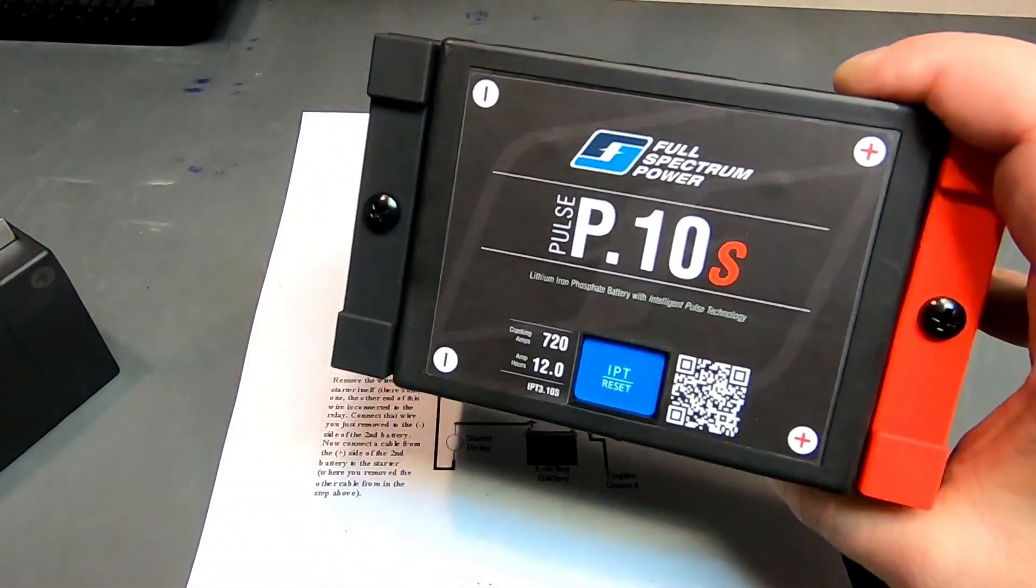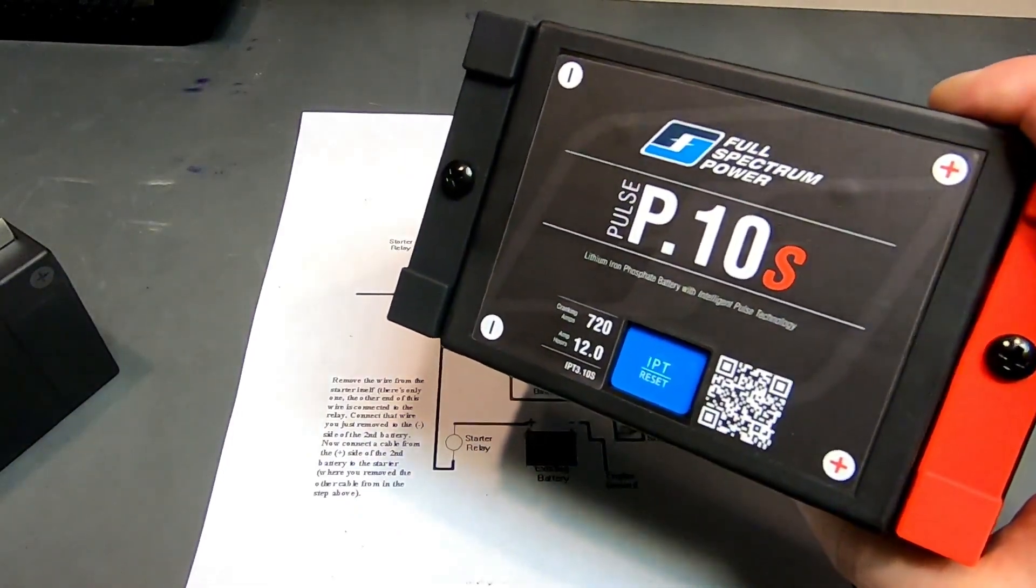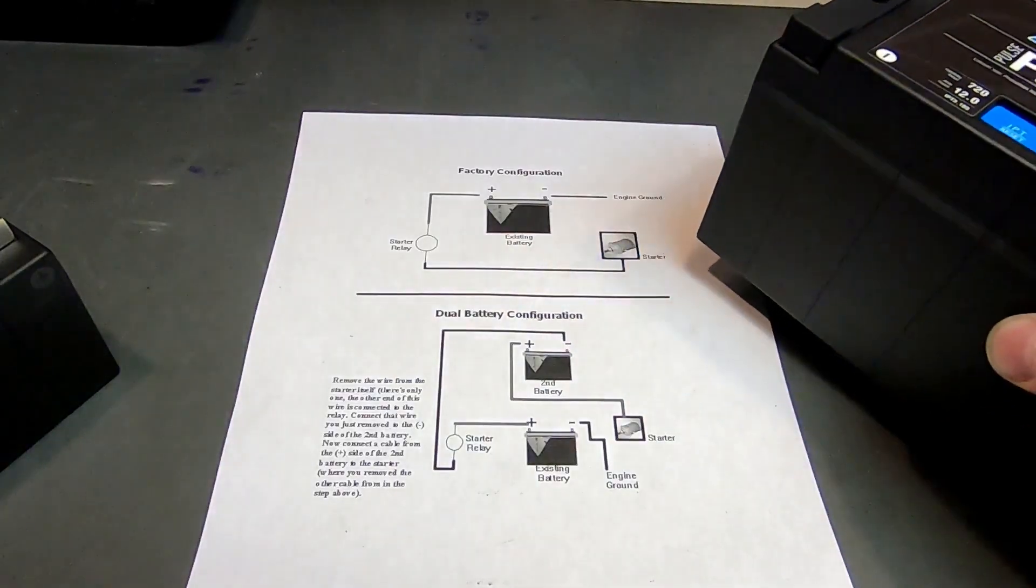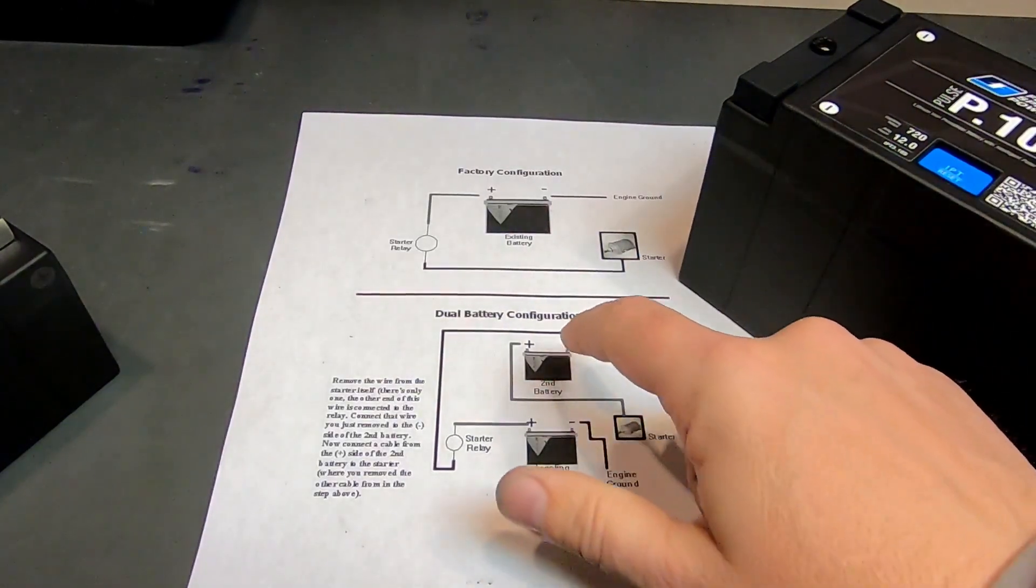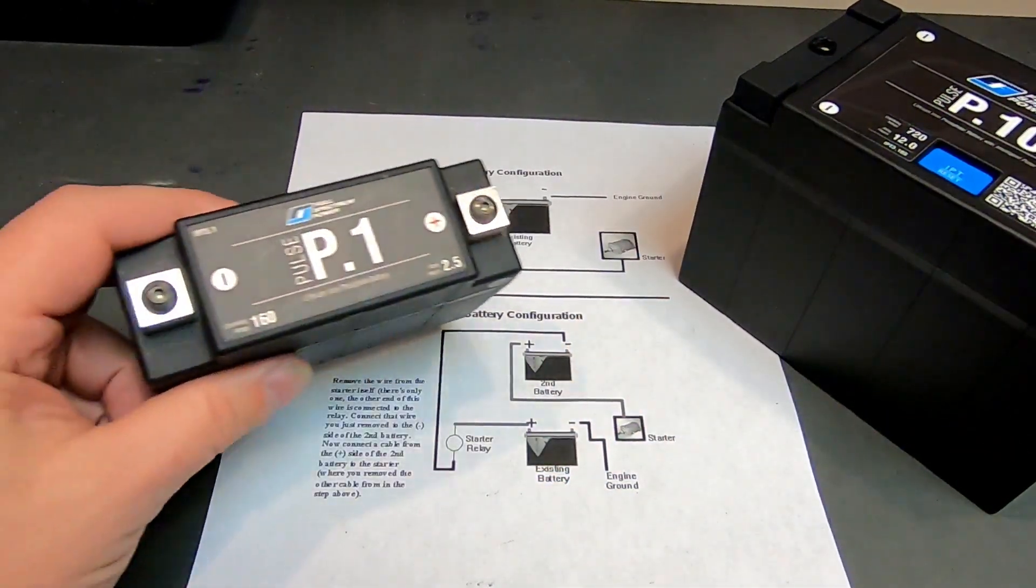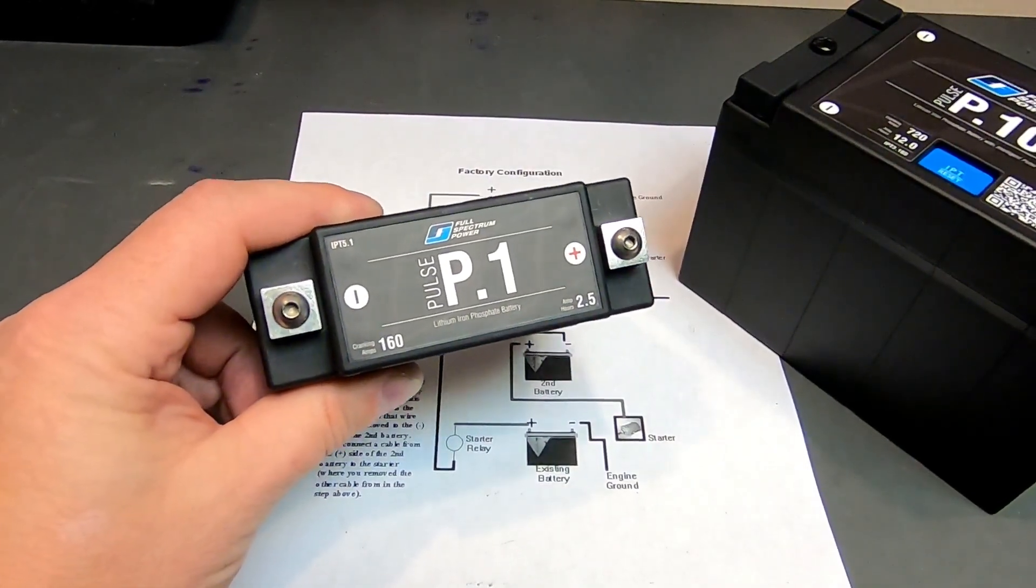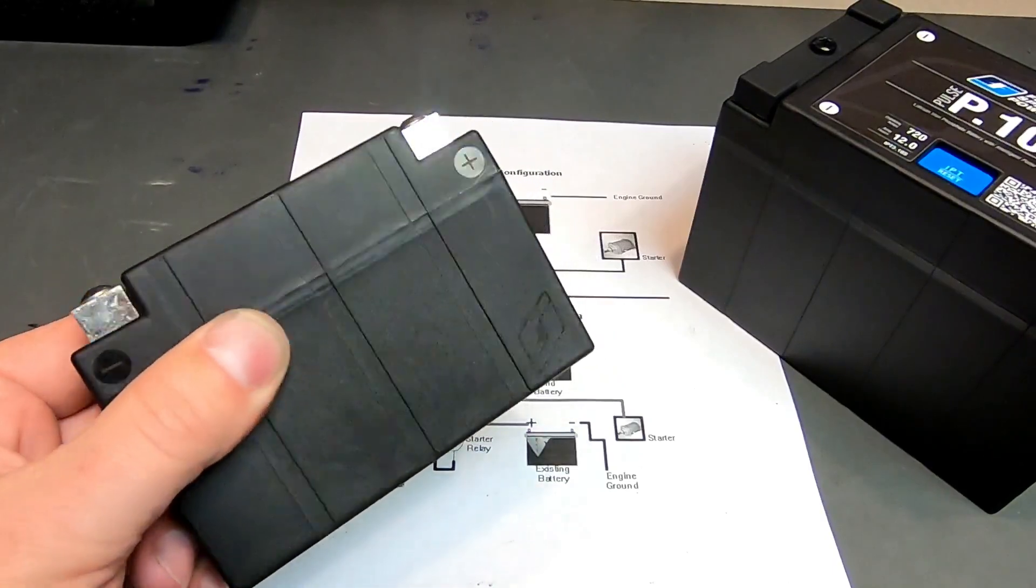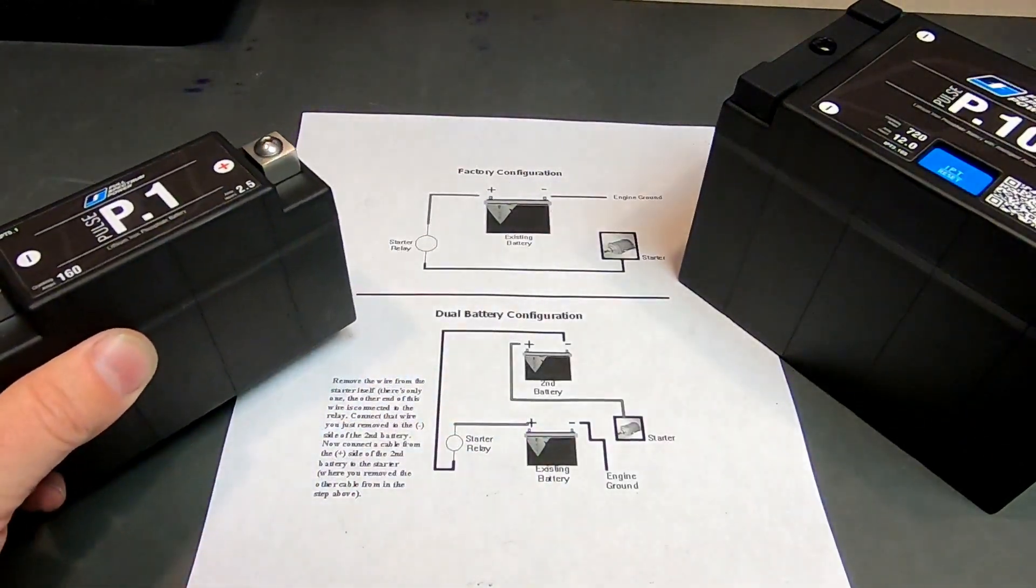In this case, 720 cranking amps of P10. Then for the second battery, we use something small like this P1. This is the smallest and least powerful battery that we offer.